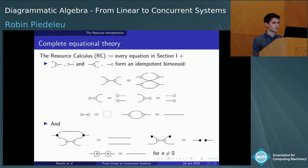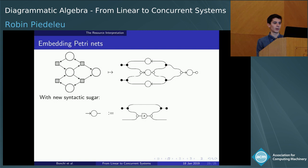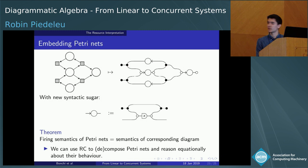Having talked about Petri Nets earlier, let's see how they embed in the resource calculus. Using the syntactic sugar for the place — expressed by the diagram we derived — we can use black nodes for transitions and white nodes to write down places with more than one input and one output. As a corollary of the completeness result, the firing semantics of a Petri Net equals the semantics of its corresponding diagram.